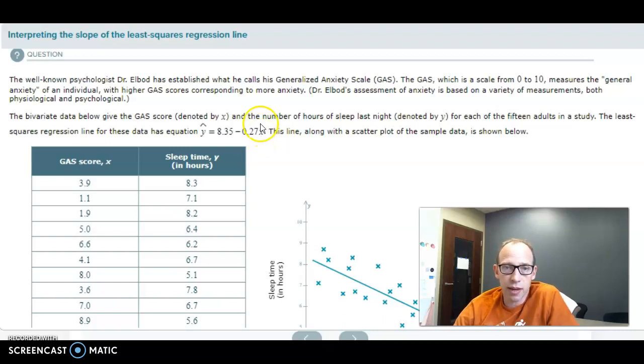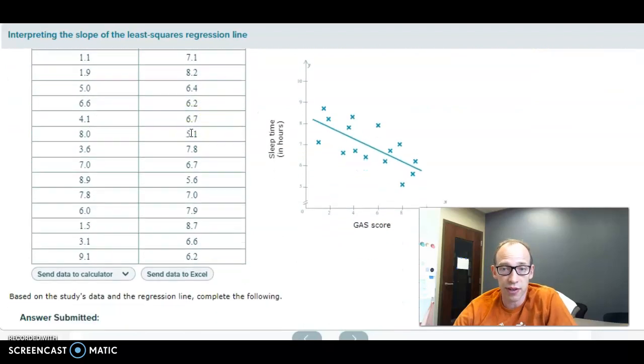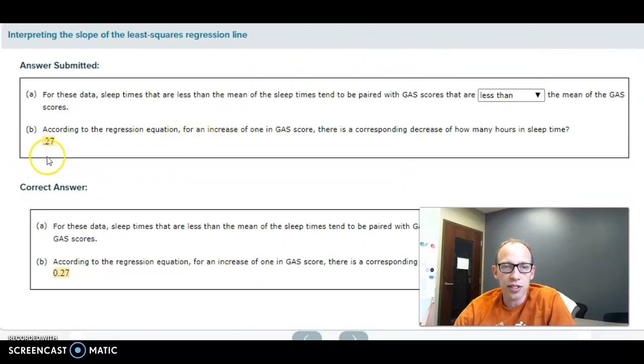that extra one is going to get multiplied by negative 0.27, and it's going to take this predicted Y down by 0.27 to be precise. So this is the correct answer: for an increase of one in the GAS score, there's a corresponding decrease of 0.27 hours of sleep time.